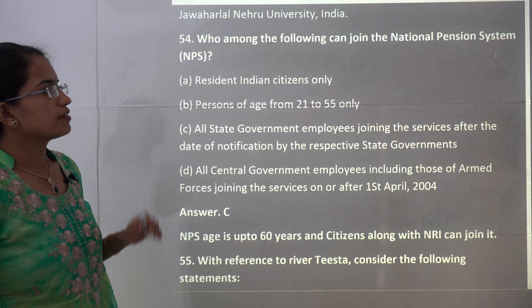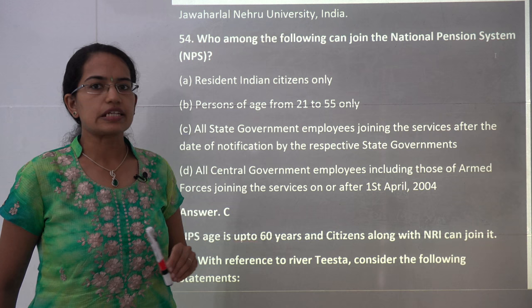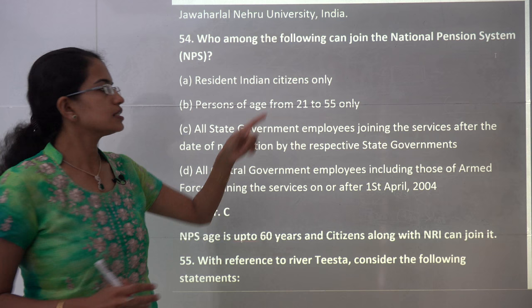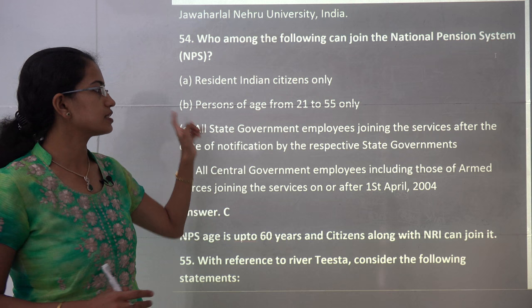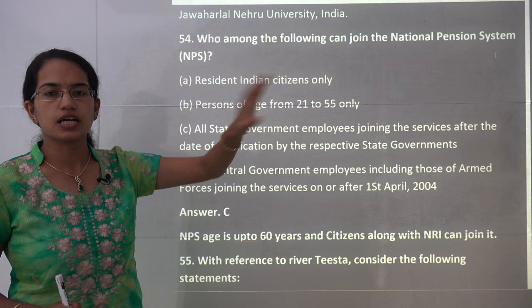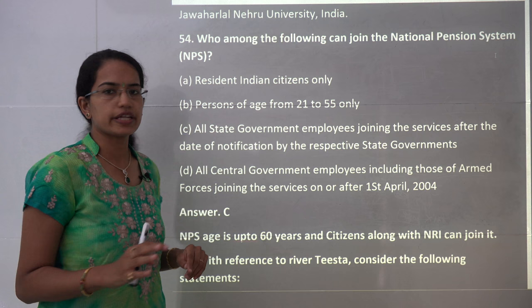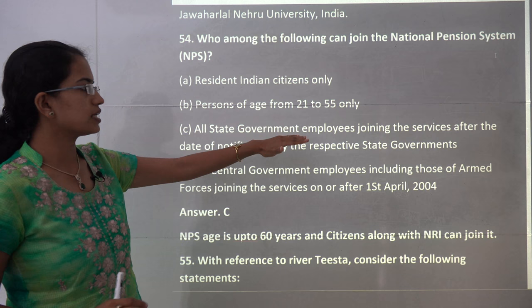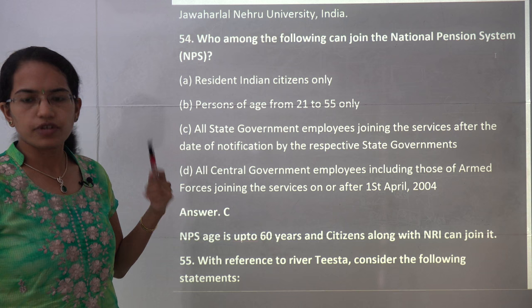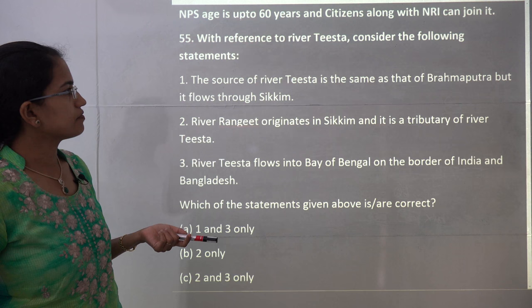The next question asks who can join the National Pension System (NPS). This is a tricky question. Residents of India can join NPS, but NRIs are also eligible, so statement 1 is incorrect. The pension age under NPS has been increased to 60 years, so statement 2 is also incorrect. Therefore C is the correct answer, which says all state government employees joining service after the date of notification would be entitled for NPS.